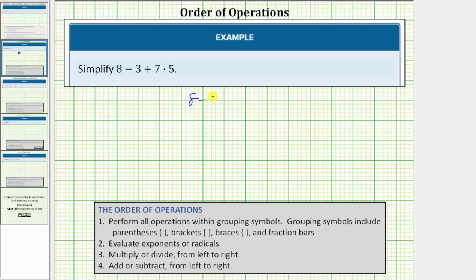We want to simplify the expression 8 - 3 + 7 × 5. To simplify this expression correctly, we must follow the order of operations outlined below.